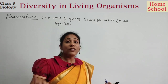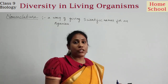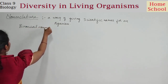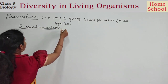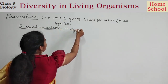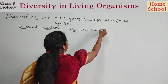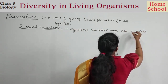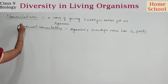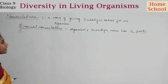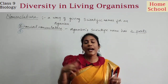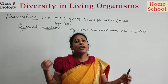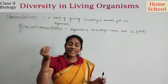We are now learning the rules of binomial nomenclature. In binomial nomenclature, the organism's scientific name has two parts. 'Bi' means two. So the name will have two parts. For example, my name Nalini Polina — Nalini is one part, Polina is another part. Binomial nomenclature is a system where the scientific name has two parts.